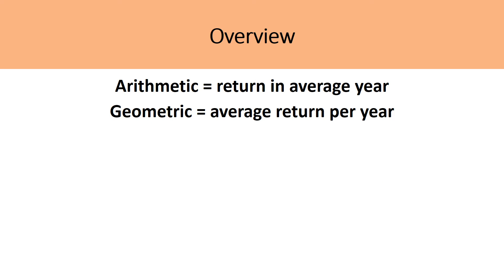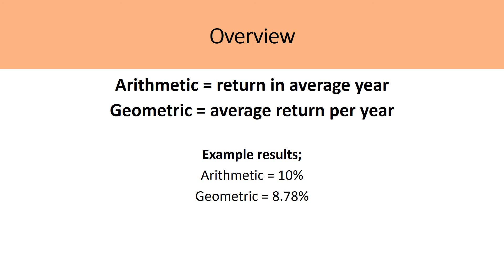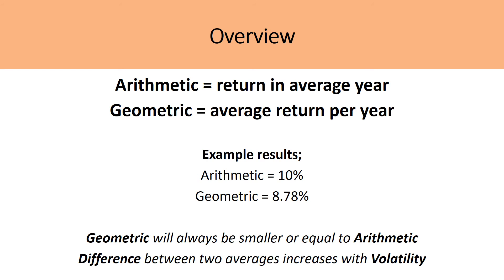So what's the overview? In the arithmetic average, you're looking at the returns in an average year. So the arithmetic average would smooth out the net returns added together, while the geometric average looks at the average return per year. So it looks at that compounding effect because these returns are dependent upon each other. In the example, the arithmetic average was 10%, whereas the geometric average was 8.78%. The geometric average will always be smaller or equal to the arithmetic average. And the difference between the two will increase with volatility.